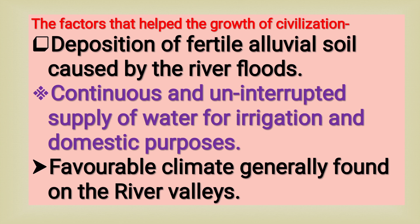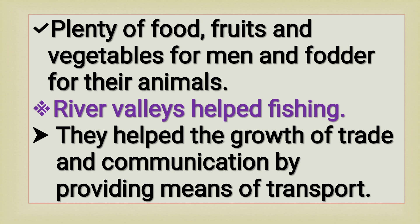Some important factors that helped the growth of civilization: First, deposition of fertile alluvial soil caused by river floods. Second, continuous and uninterrupted supply of water for irrigation and domestic purposes. Third, favourable climate generally found in river valleys. Fourth, plenty of food, fruits and vegetables for men and fodder for their animals. Fifth, river valleys helped fishing. Sixth, river valleys helped the growth of trade and communication by providing means of transport.